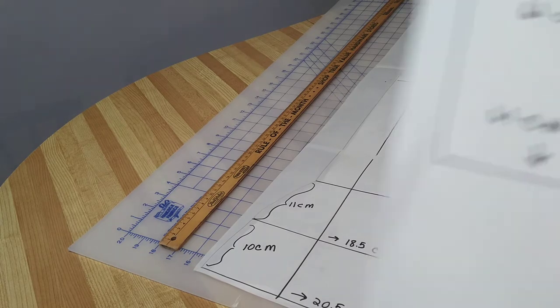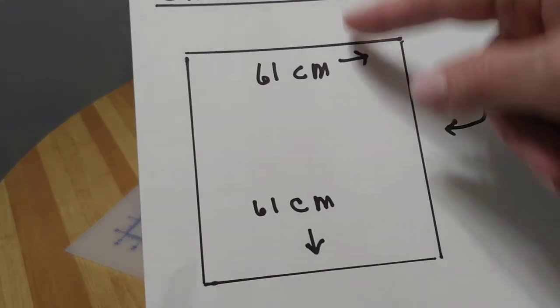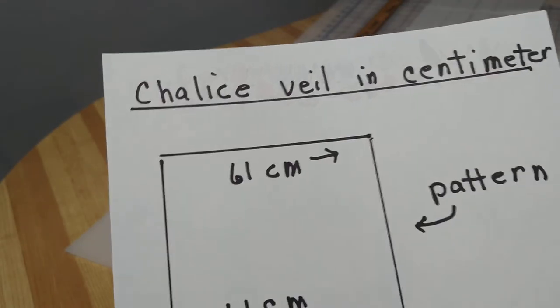Now for the chalice veil. The chalice veil is 61 centimeters by 61 centimeters. That's it for the chalice veil.